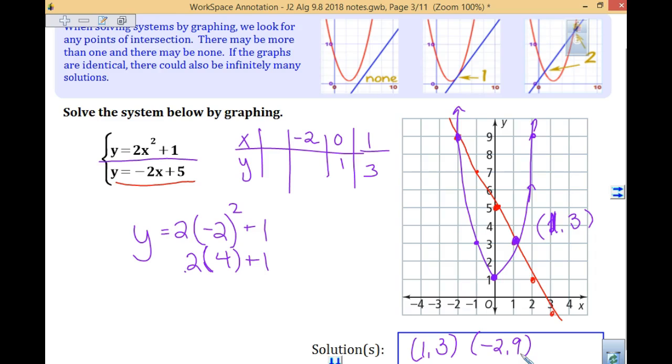If you're not sure you did it right, the nice thing about any time you do systems is you can check your answer. If I am checking negative 2, 9, I know it works in the quadratic because I just did that. So I want to check it in my linear. If I plug it into the linear equation, y equals negative 2 times negative 2 plus 5, 4 plus 5 is 9. That checks. So that's the graphing.